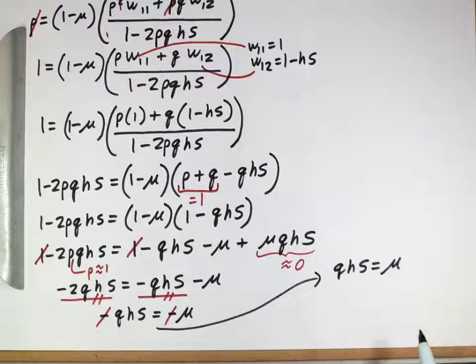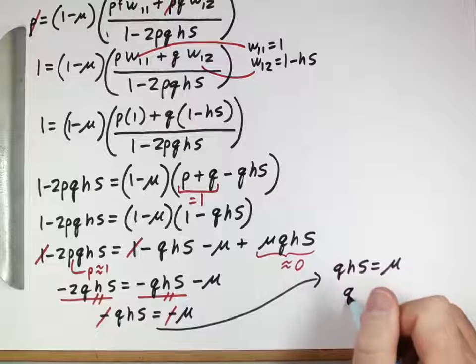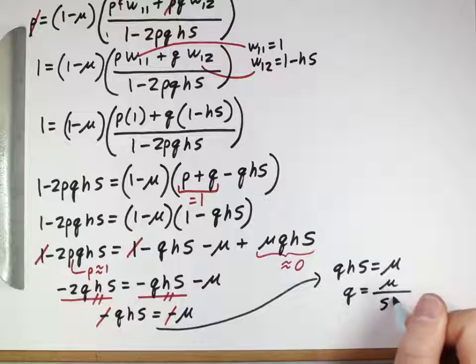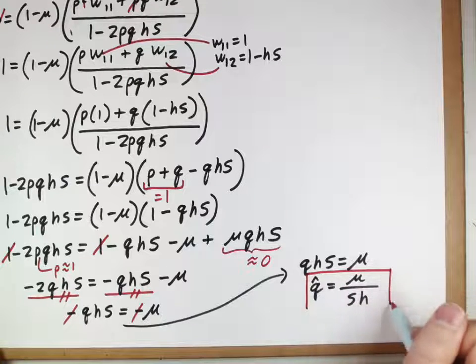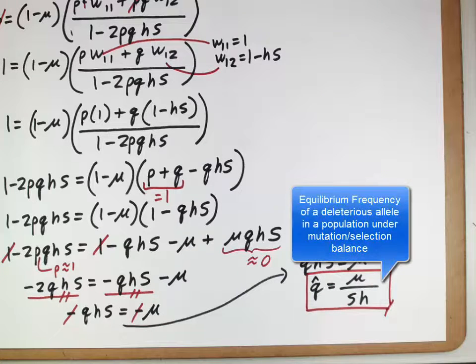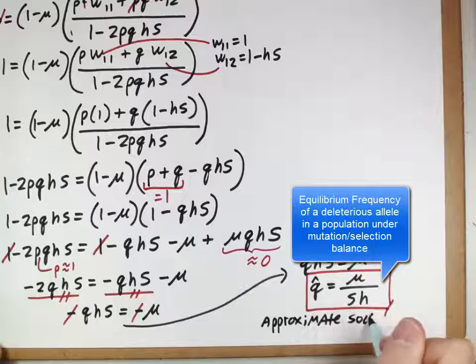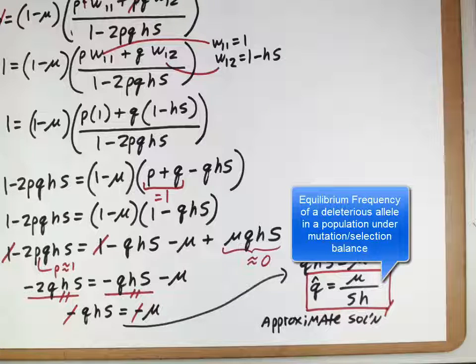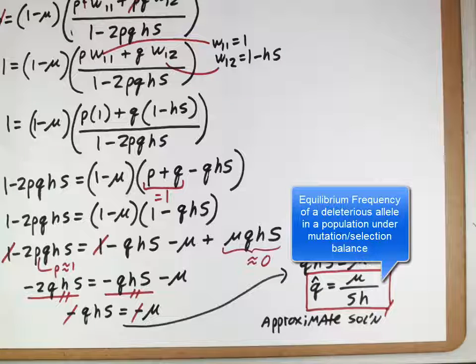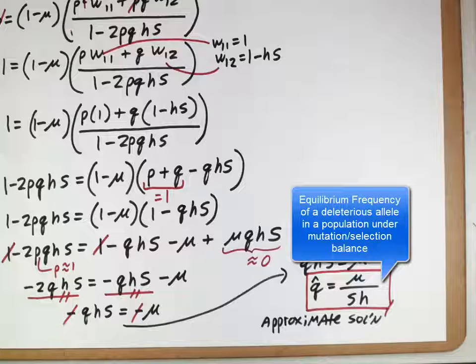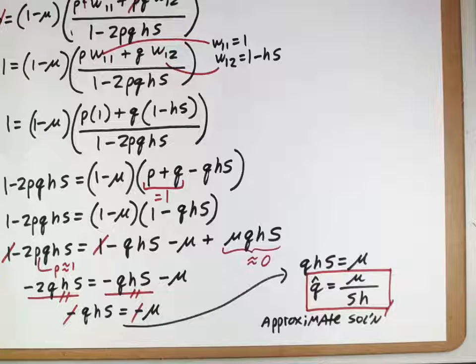Now remember what we're doing all this for is to solve for an equilibrium frequency of one of the alleles, and so we have q right there, so really we want to solve for q. So q equals μ over sh, and that'll actually be an equilibrium frequency, because we started this whole thing off by assuming that there would be no change in p, and that's the same thing as no change in q. And so this thing here, this is our approximate solution for the equilibrium frequency of a deleterious allele in a population under mutation-selection balance, where mutations keep making more deleterious alleles and selection keeps removing those alleles. How many of those alleles do you end up with, or what is the equilibrium frequency of those alleles in that population? It's given by this equation here, which we can then use to answer some interesting questions.